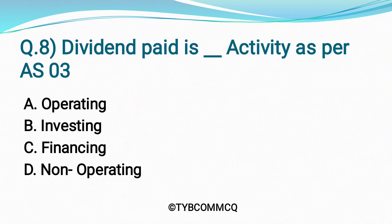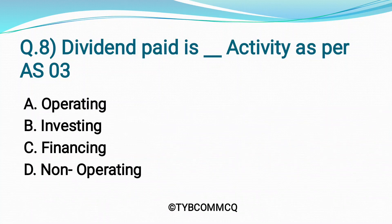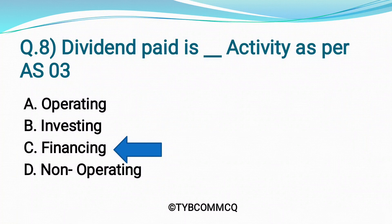Question 8: Dividend Paid is which type of activity as per AS3? Option A: Operating, Option B: Investing, Option C: Financing, Option D: Non-Operating. Yes, Option C — Financing — is the correct answer.